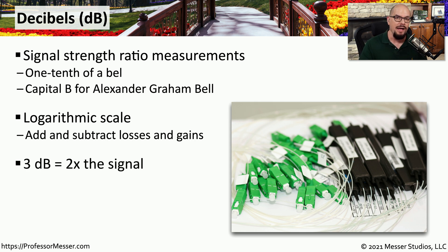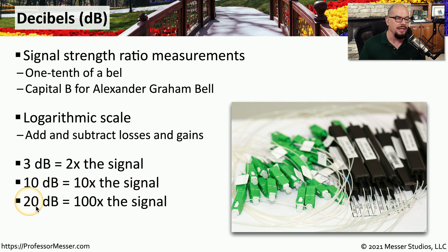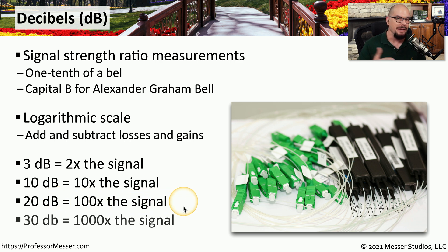If you looked at how the logarithmic scale relates to the amount of signal, you would see that 3 dB would be twice the signal, 10 dB would be 10 times the signal, 20 dB would be 100 times the signal, and 30 dB would be 1,000 times the signal. You can see that logarithmically, this scales up very quickly as you begin counting up additional decibels.